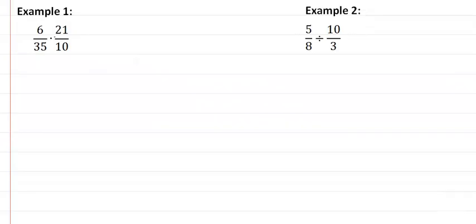In the first example here, we're looking for common factors. I can see that I have a common factor of 7 and I have a common factor of 2. That's going to give me 9 25ths. We want to reduce before we multiply.